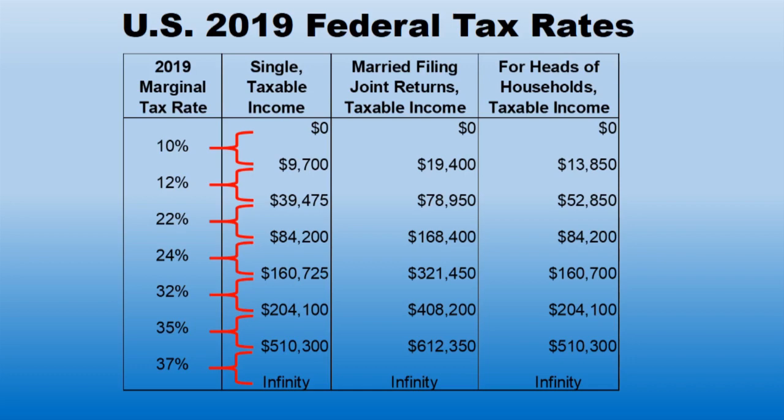In the US we do not have a flat tax — we are taxed on a marginal tax rate basis. A certain amount of dollars are taxed at one rate, and then the next set of dollars are taxed at another rate. So when you say you're in the 24% tax bracket, that doesn't mean you're paying 24% on all of your income. You're paying 24% on a certain amount of your income, and the income below that is taxed at a lower rate.